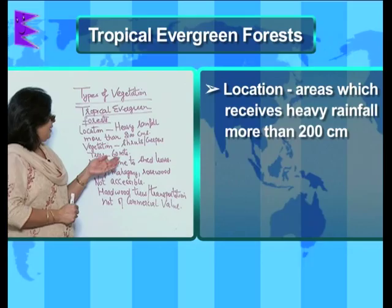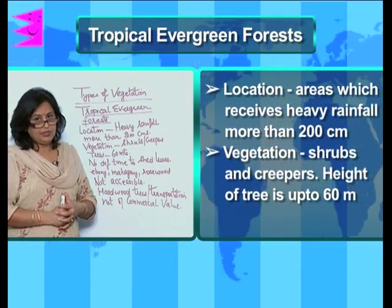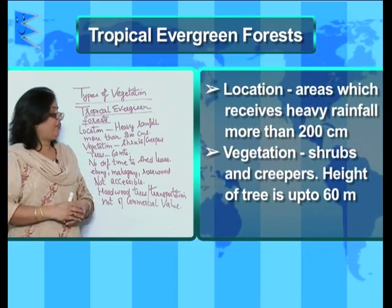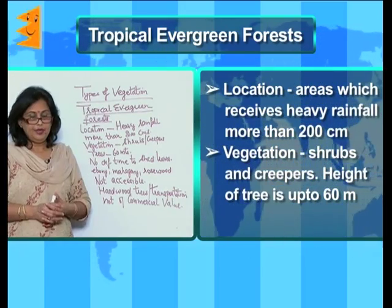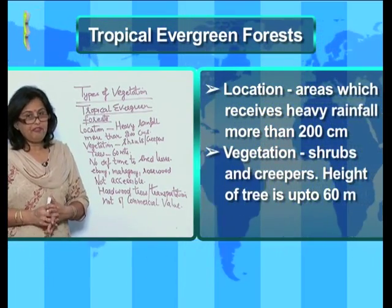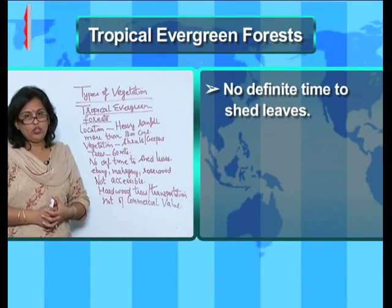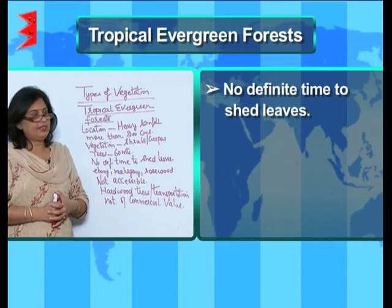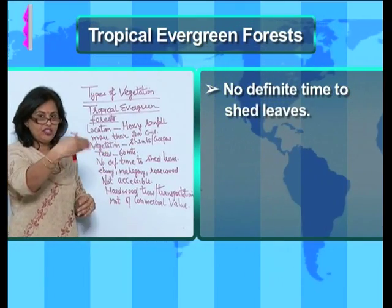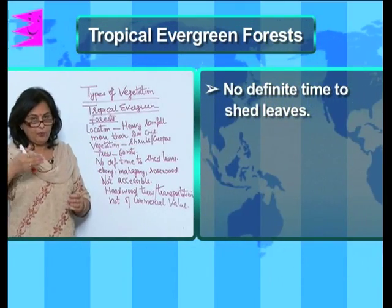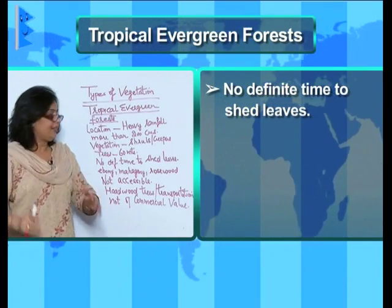The vegetation here consists of shrubs and creepers. The height of the trees can go up to 60 meters. Another important characteristic of the forest is that there is no definite time to shed leaves of the various trees. That is why it is called evergreen, because various trees shed their leaves at various seasons, which means some or the other tree is always green.